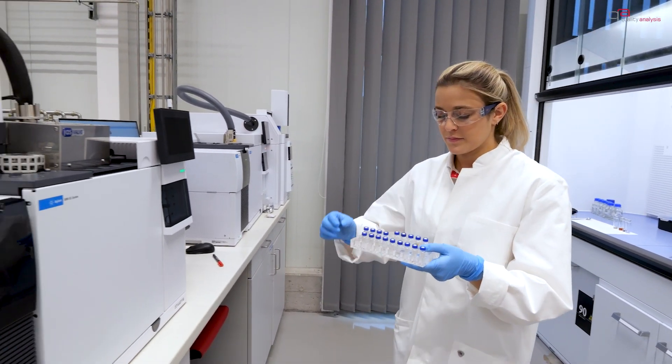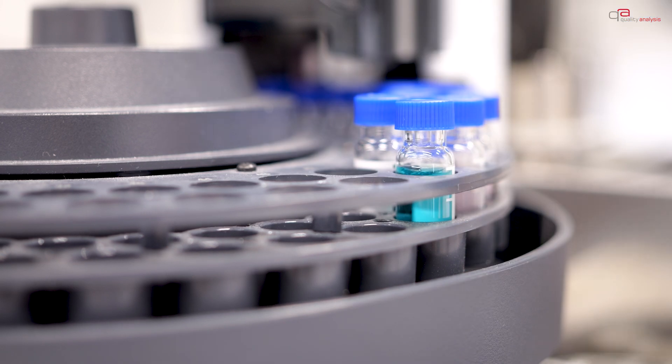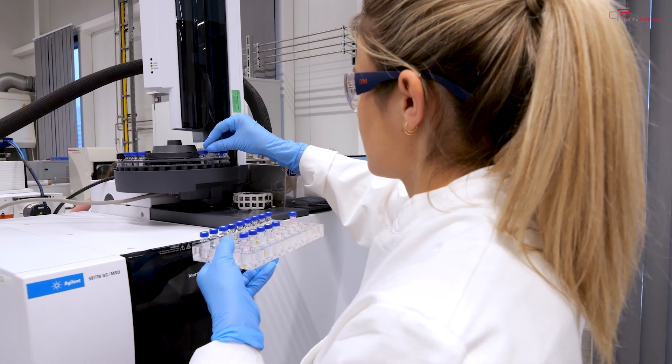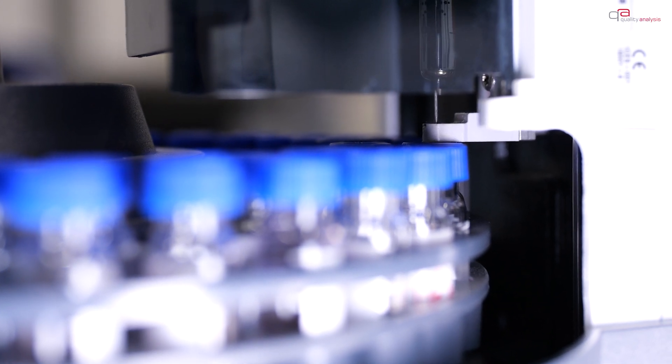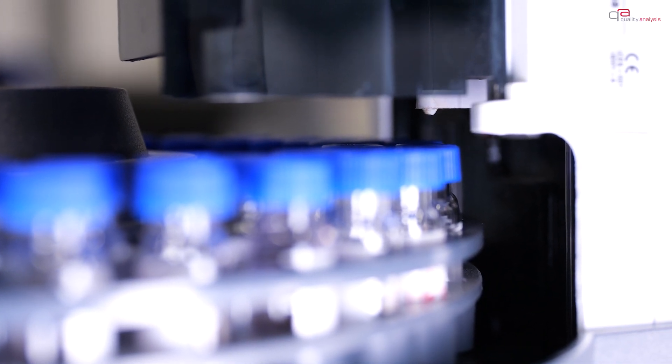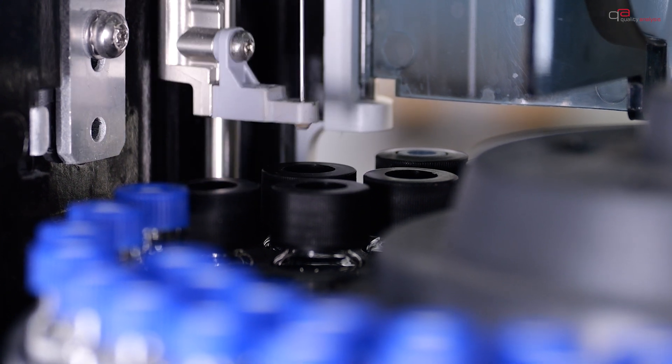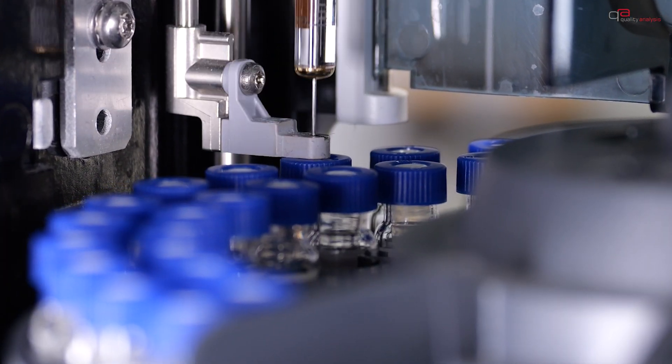The sample is introduced into the gas flow via the injector system. A syringe is used to inject the gas into the split-splitless injector. Here, the sample is vaporized and transferred by the carrier gas mobile phase, usually helium or hydrogen, to the separation column.